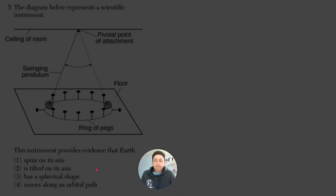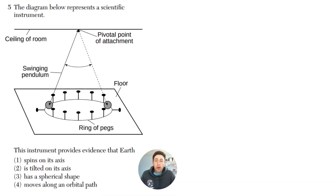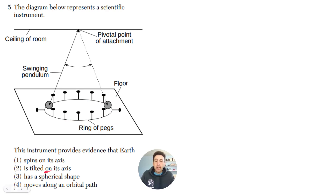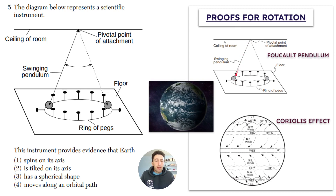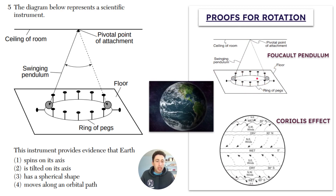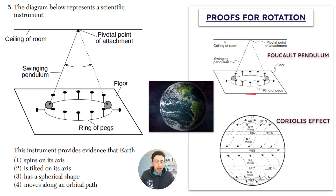Question five: the diagram represents a scientific instrument — a pendulum attached to the ceiling, swinging, with a ring of pegs being knocked down on the floor. This instrument provides evidence that Earth spins on its axis. This is a Foucault pendulum, which is one of the two proofs that Earth rotates. It's a free-swinging pendulum from a ceiling. You have rings of pegs and it's swinging side to side. But since the Earth is rotating underneath it, the pendulum will knock over all the pins in the circle, even though it's only moving side to side.